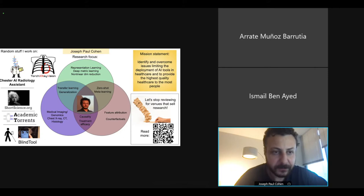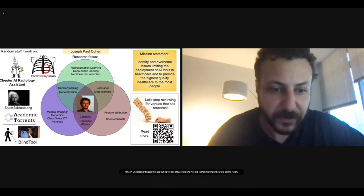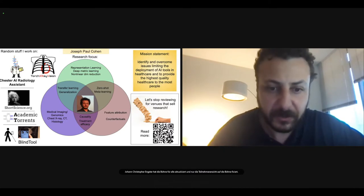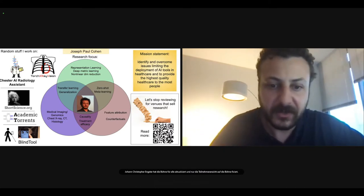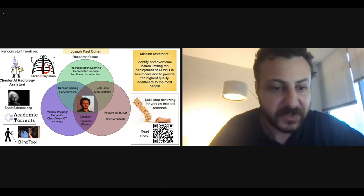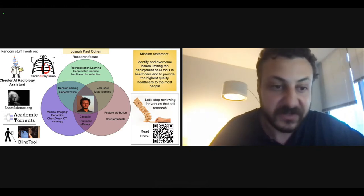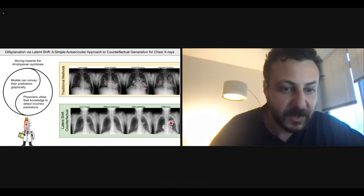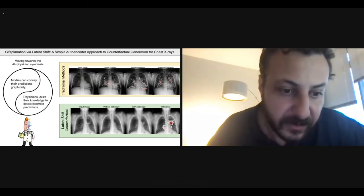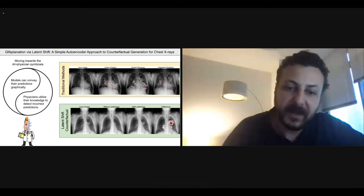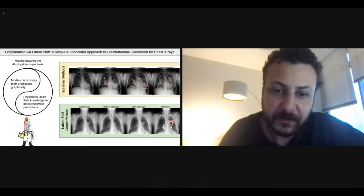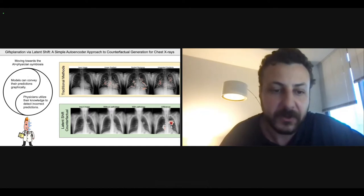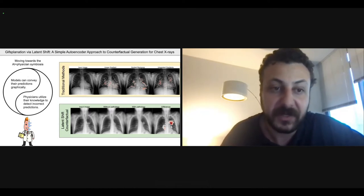My name is Joseph Paul Cohen. I work on all sorts of projects — assistive tools for blind people, platforms for data sharing, and tools for people researching chest X-ray analysis with deep learning. My primary goal is to increase access to healthcare, largely using technology. Our work comes from the perspective that in order to reduce false positives, we need to move towards an AI-physician symbiosis, and we believe we can do this using counterfactuals.